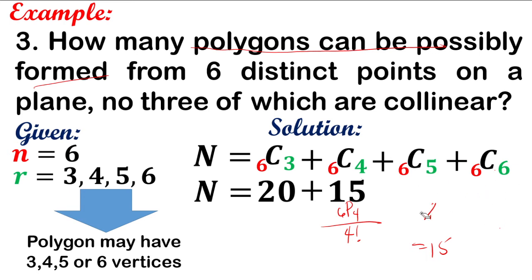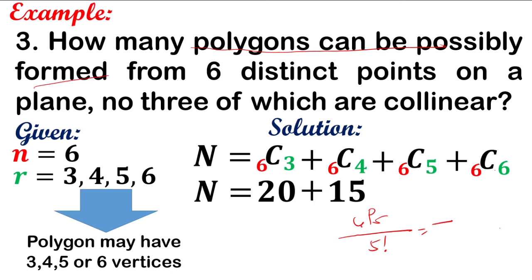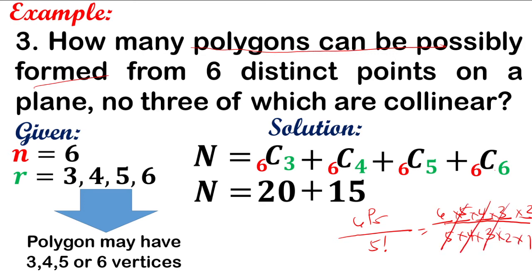For pentagons: C(6,5) equals P(6,5) over 5 factorial. P(6,5) is 6 times 5 times 4 times 3 times 2. Over 5 factorial, which is 5 times 4 times 3 times 2 times 1. Cancel 5, 4, 3, and 2. So 6 divided by 1 is 6. C(6,5) is 6. For hexagons: C(6,6) — taking all 6 points — is 1.